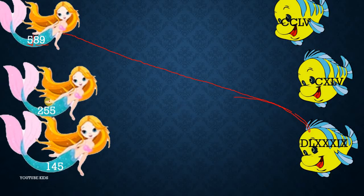Now for the next one, the first digit is 2, so 200 means CC, which equals 100 plus 100.